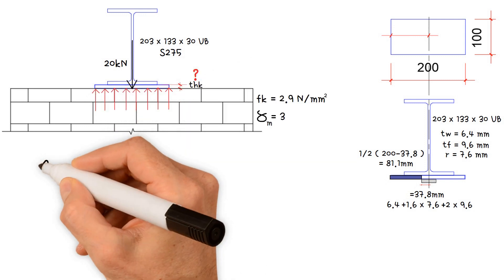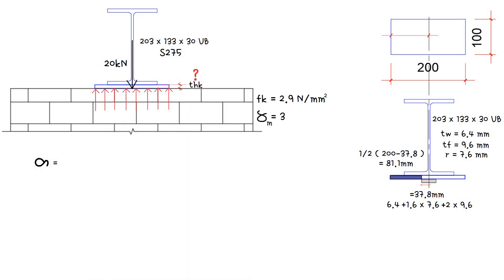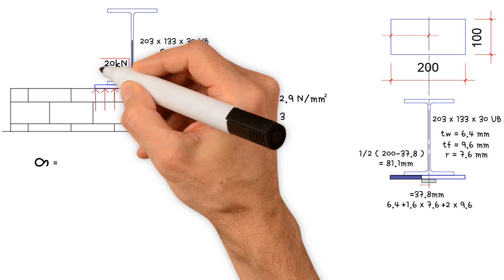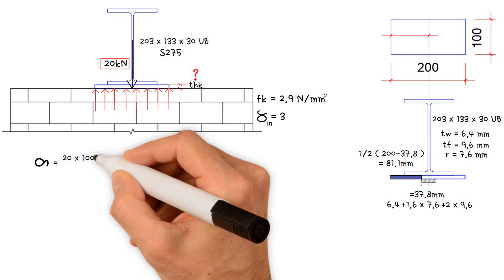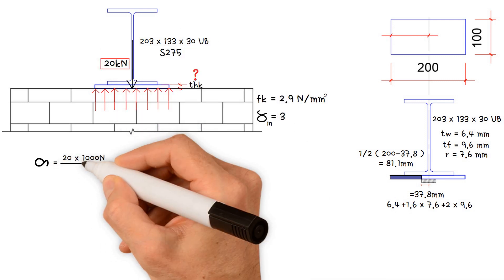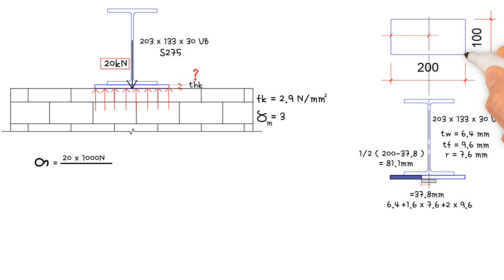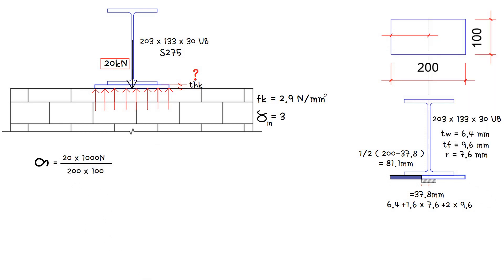Now we need to work out the stress under the plate, which equals the steel beam reaction of 20 kN (×1000 to convert to Newtons), divided by the area of the plate, 200 mm × 100 mm. This gives us a value of 1 N/mm².